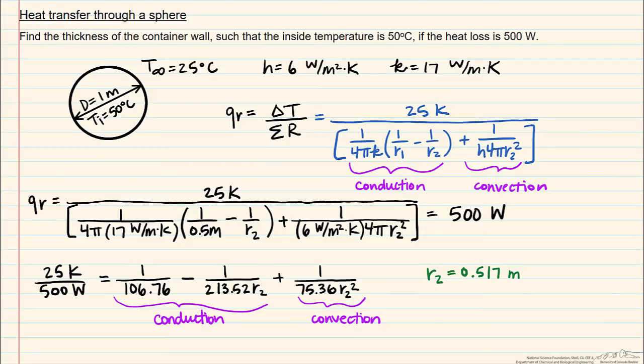This is the outside radius, but we need to subtract from that inside radius. In this case, the thickness of the wall is going to be 17 millimeters.